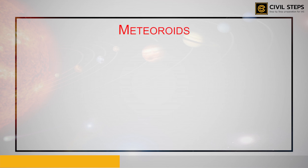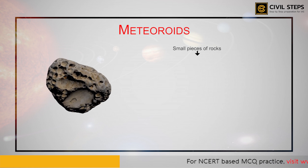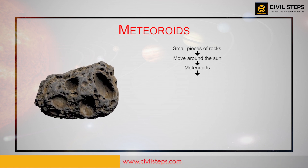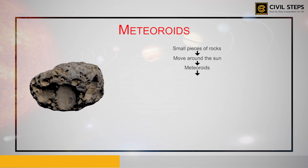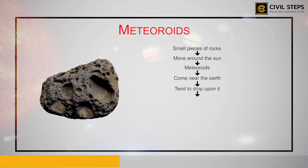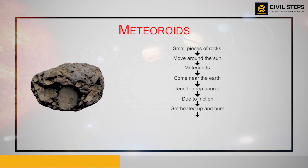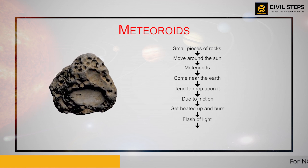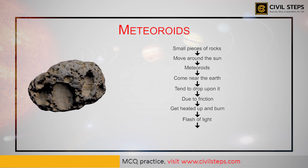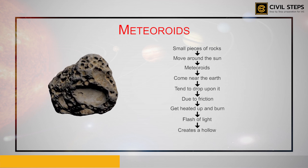We will now talk about meteoroids. Meteoroids are the small pieces of rocks which move around the Sun. Sometimes these meteoroids come near the Earth and tend to drop upon it. During this process, due to friction with the air, they get heated up and burn, causing a flash of light. Sometimes a meteor without being completely burnt falls on the Earth and creates a hollow.